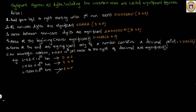Hi, it's me, tutor Vinod. In this video we are going to talk about significant figures. Significant figures are all digits, including the uncertain ones, which are present in the given numbers. There are certain rules to follow in order to find how many significant figures a number carries.